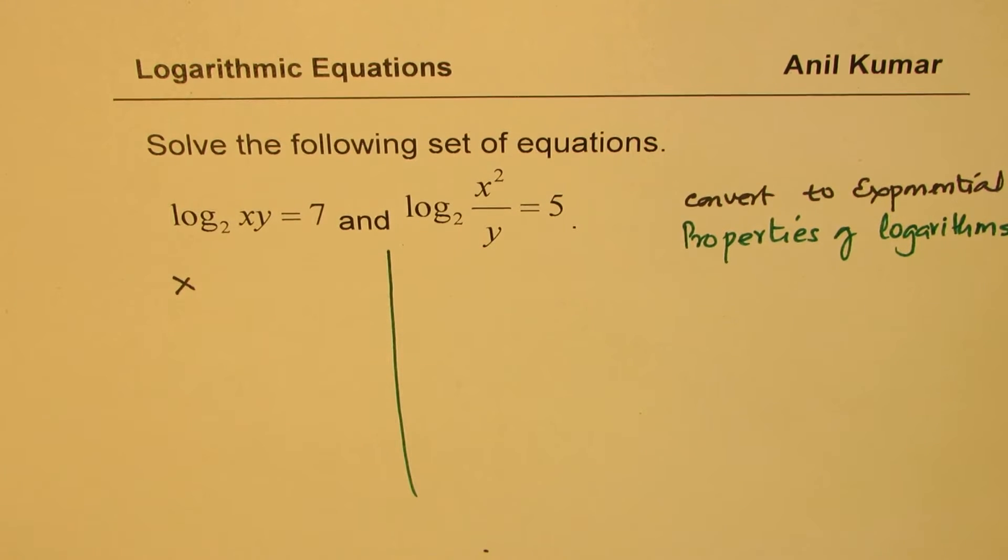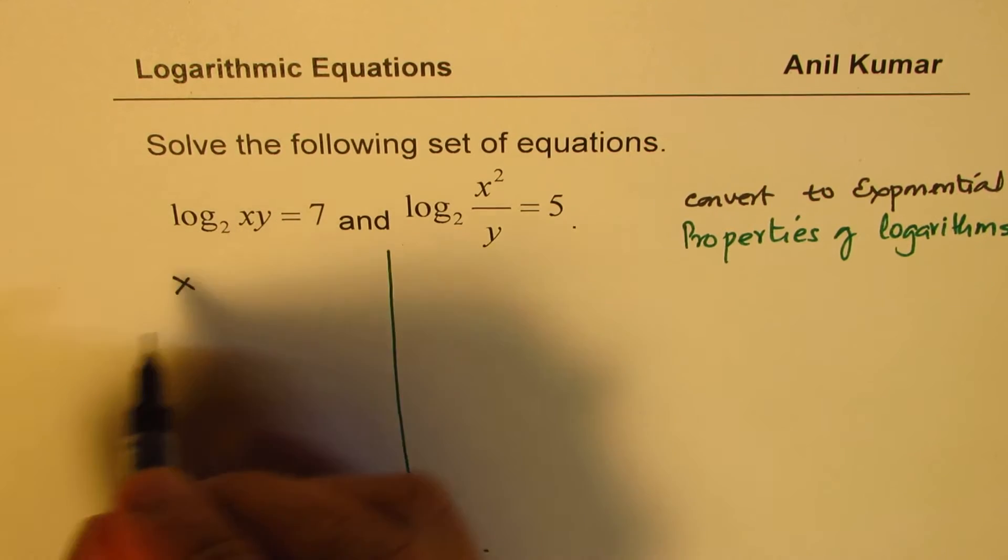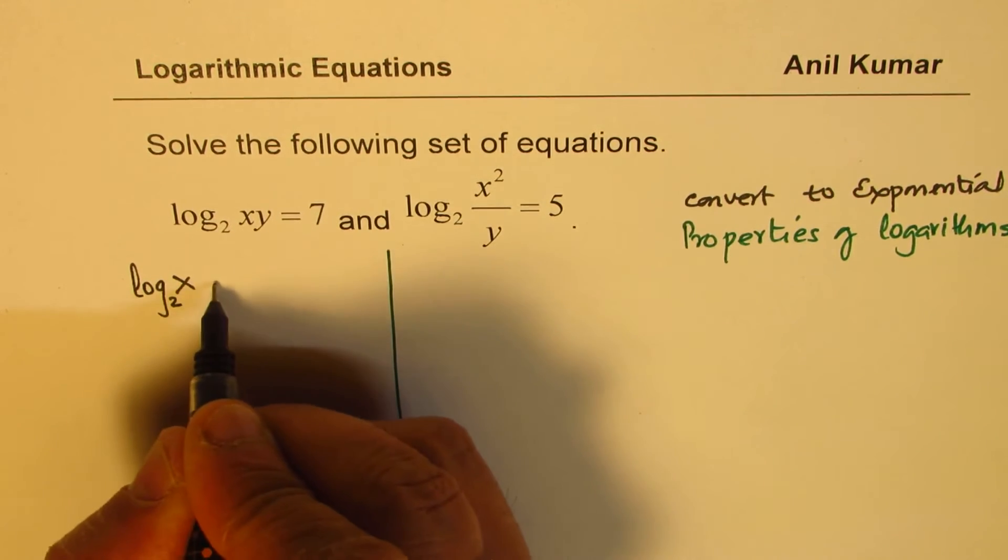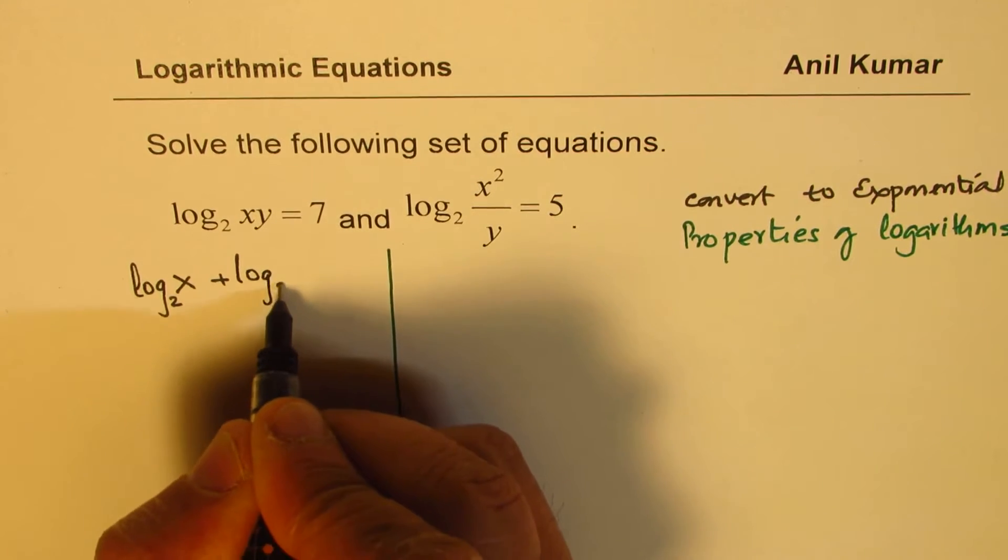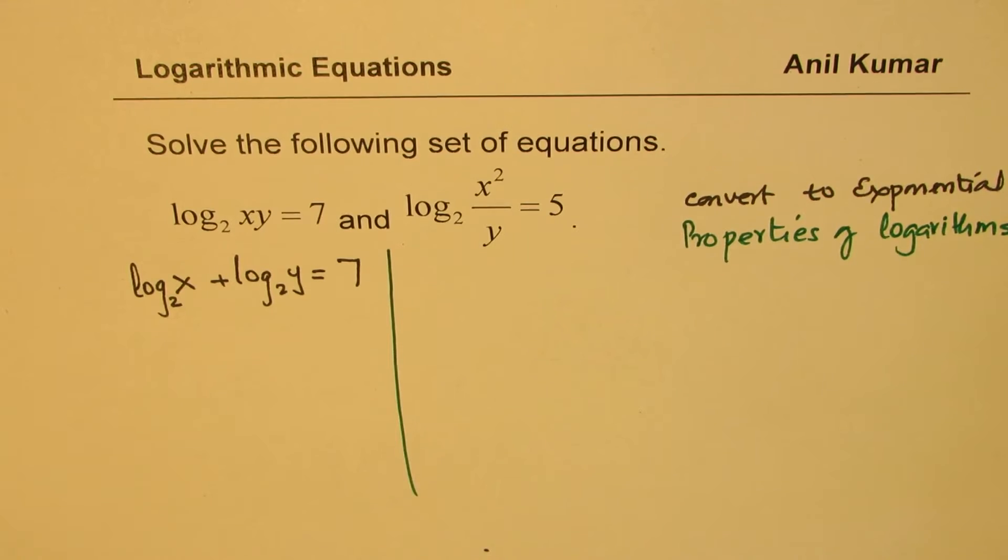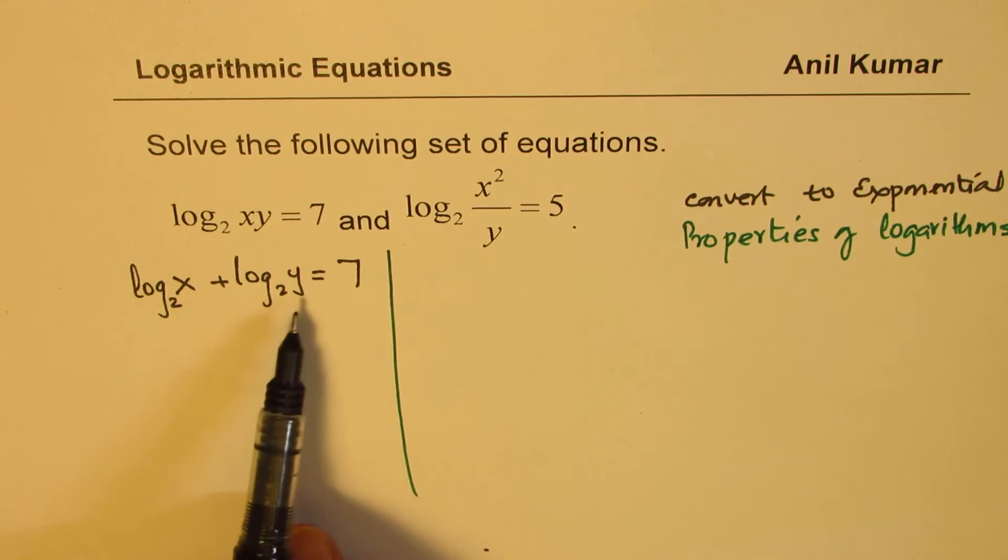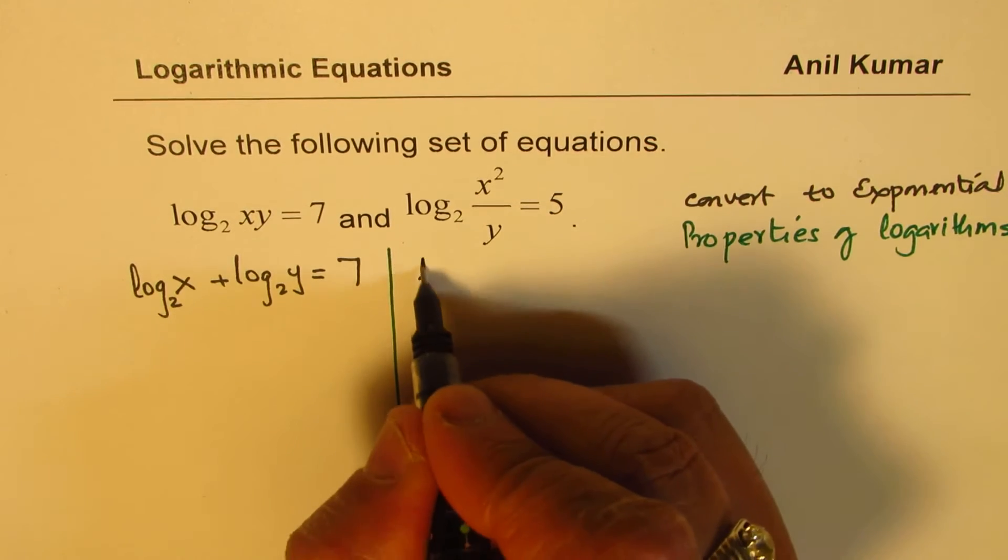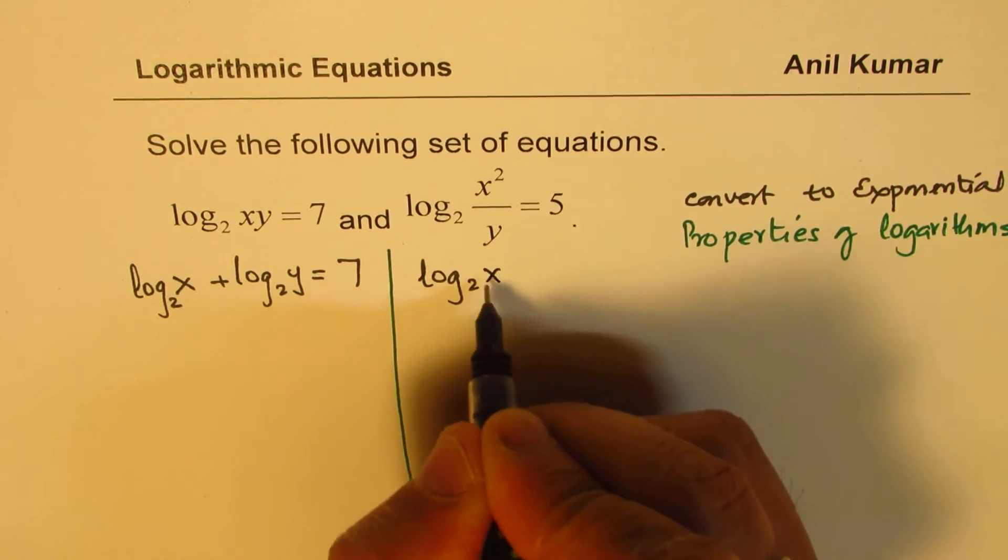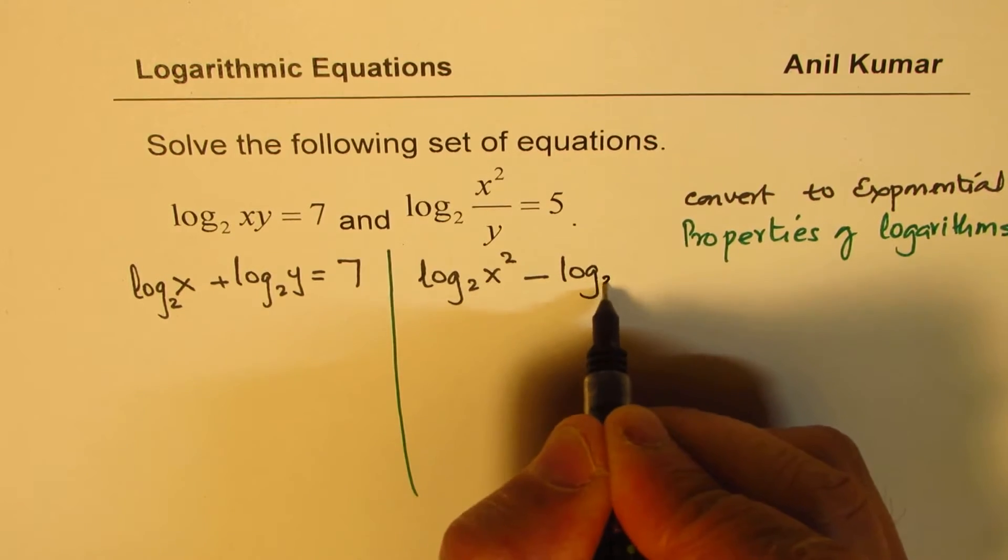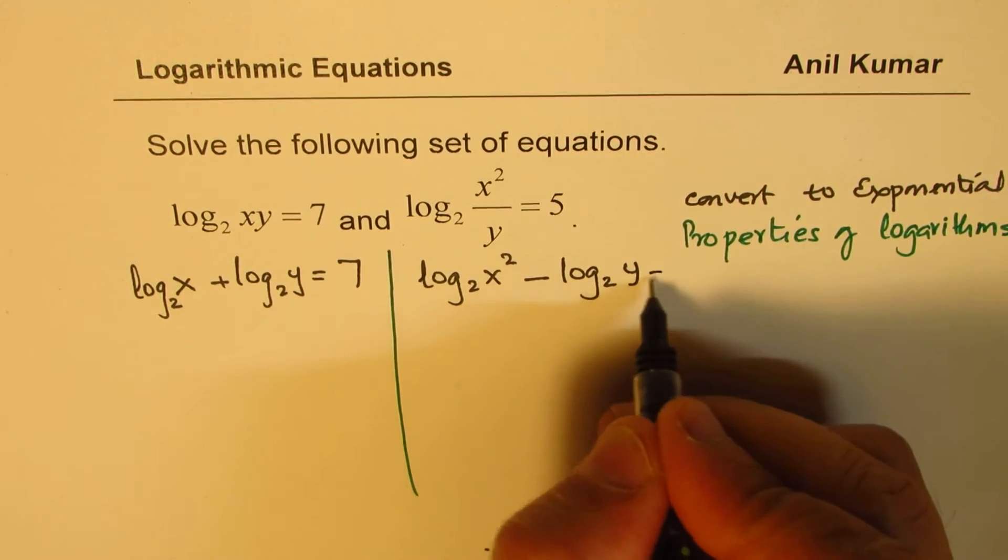And then we can get two equations. For the product, I could write this as log base 2 of x plus log base 2 of y equals 7. So we actually get one equation with logs. Let me do this here also. On this side, I get log base 2 of x squared. This is divided, so it will be minus log base 2 of y equals 5.